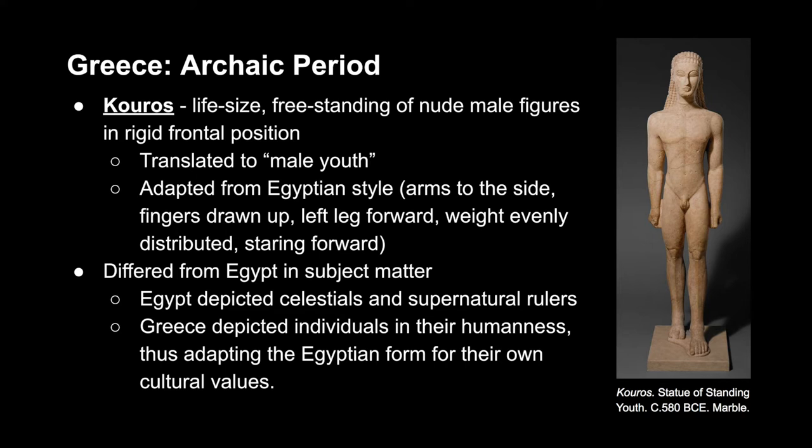Also in the Archaic period, we see figurative sculptures. The Kouros we see here can be described as a life-sized, free-standing, nude male figure in a rigid front position. Translated directly, it means 'male youth.' We can see the influences from the Egyptian style: arms to the side, fingers drawn up, the left leg forward, weight evenly distributed, and staring straight ahead.